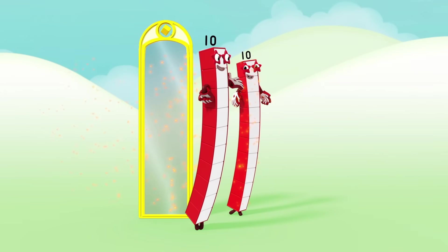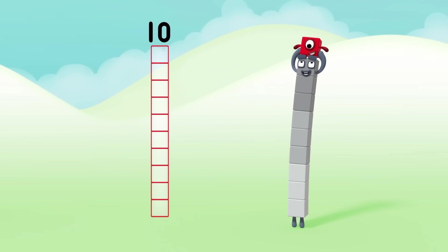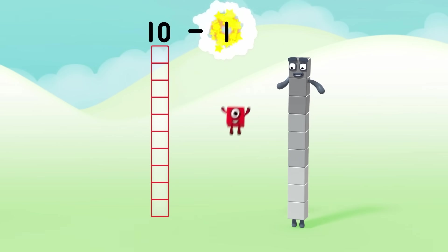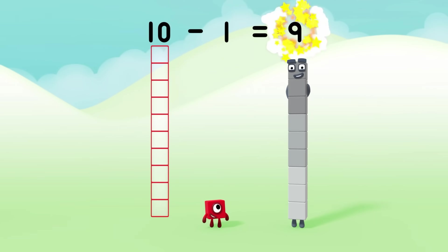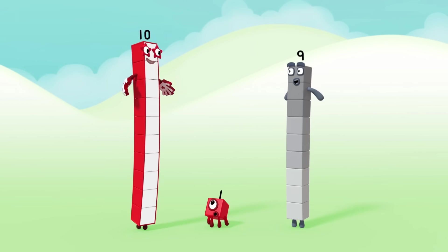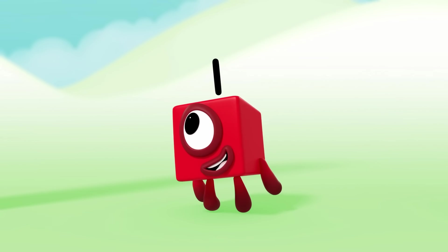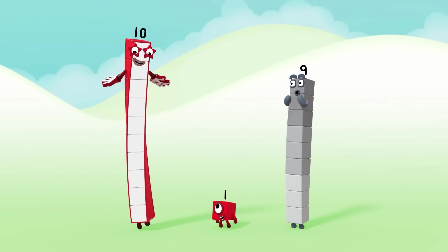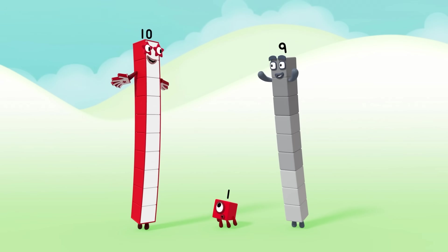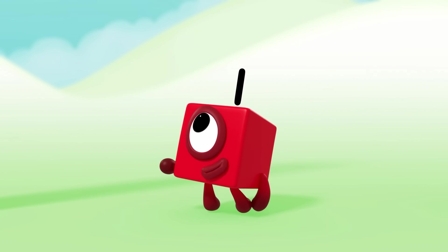Watch this. 10 minus 1 equals 9. You're amazing. One bigger — you're one bigger. Why do you have a one on top?